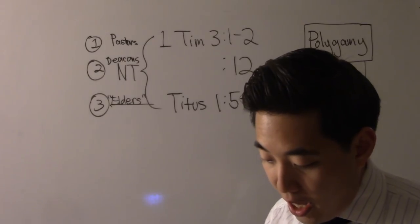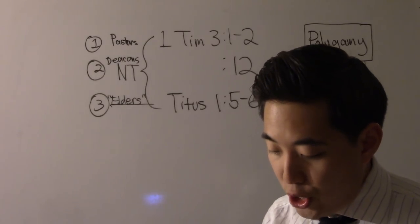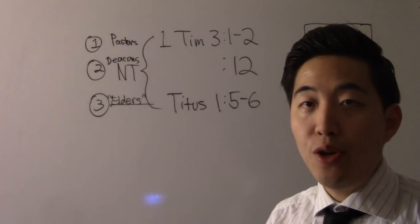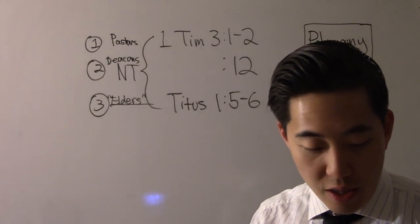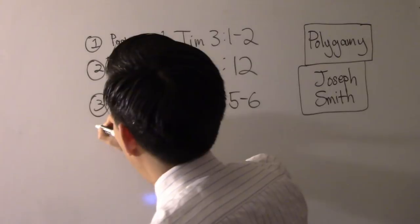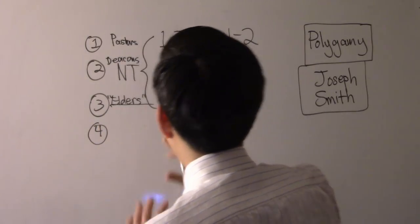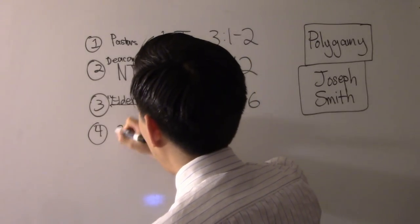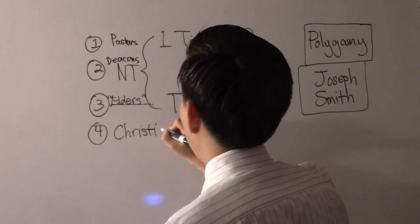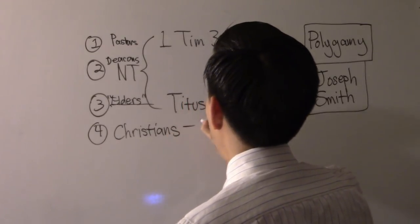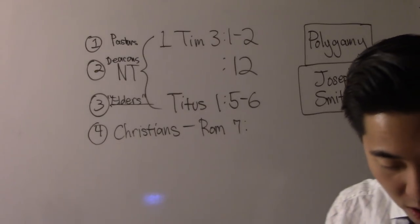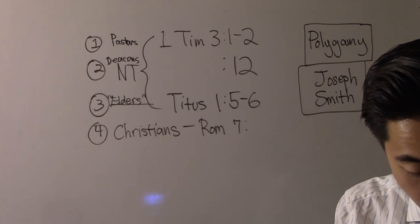We're also going to look at Romans chapter 7. Now we do know this, that the Bible condemns more than one wife. It condemns more than one marriage. You have to have only one marriage. So we see that Christians are also condemned for marrying more than one. Look at Romans chapter 7, and notice what the Bible reads right here.